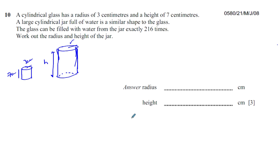So we've got to find the radius of this and we're going to find the height of this. What do we know here? They've told us the glass can be filled with water from the jar exactly 216 times. So what they've told us is if we divide the volume of the jar by the volume of the glass, we'll get 216.